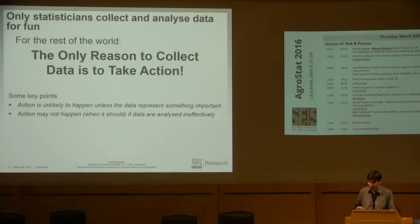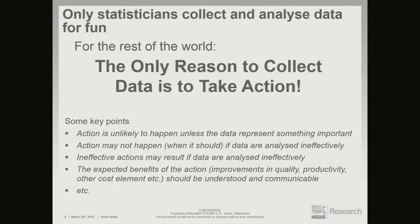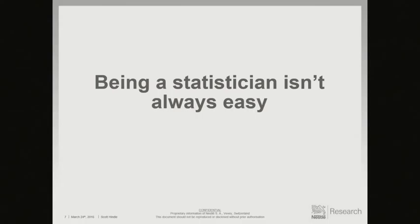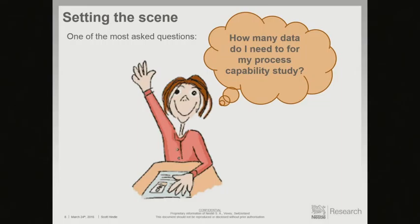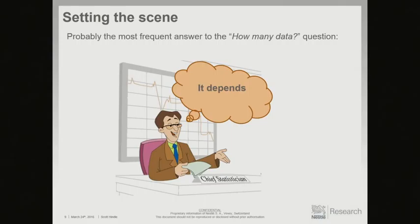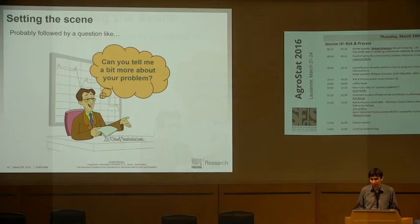That's the theme of the talk. As stated by this guy, formerly of Ford, some key points: action probably won't happen unless the data represents something important. Action may not happen if data are analyzed ineffectively. Ineffective actions can happen with ineffective analysis. And the expected benefits of the action should be understood and communicable — otherwise we won't get the buy-in to take the action.